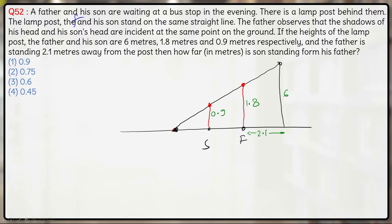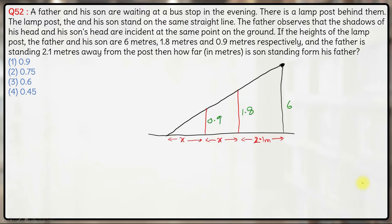So, the first thing here is that son's height is half the height of father, that means son's shadow will be half the shadow of father. So if this length is x, this full length will be 2x, that means this will also be x here. Now, obviously father, son and the lamp post are standing straight, that means this angle will be 90 degrees for all three.